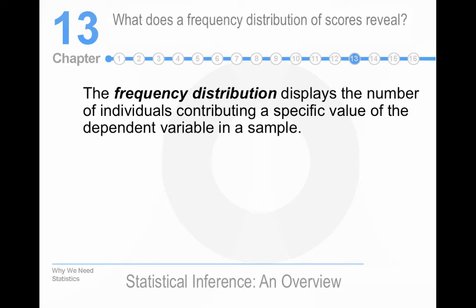What about frequency distributions? Well, that's the number of people on each value of the dependent variable. This is probably the most common way to present data. If you've ever seen a normal or bell curve, that's a frequency distribution.